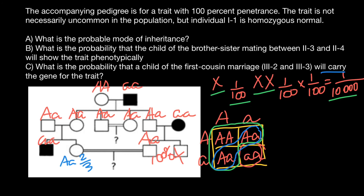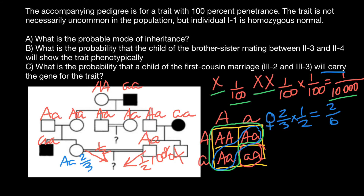Being heterozygous, what is the probability that he is going to give the recessive allele to his progeny? Sex is not important here. There are two variants: dominant allele or recessive allele. So there is a one-half probability that he would give the recessive allele. As for the mother, she also has a one-half probability of giving the recessive allele and one-half probability of giving the dominant allele. So for the mother, our calculation would be two-thirds multiplied by one-half, giving a probability of two over six, or one-third, that she will give the recessive allele to her progeny. And for the father, the probability to give the recessive allele is one-half.